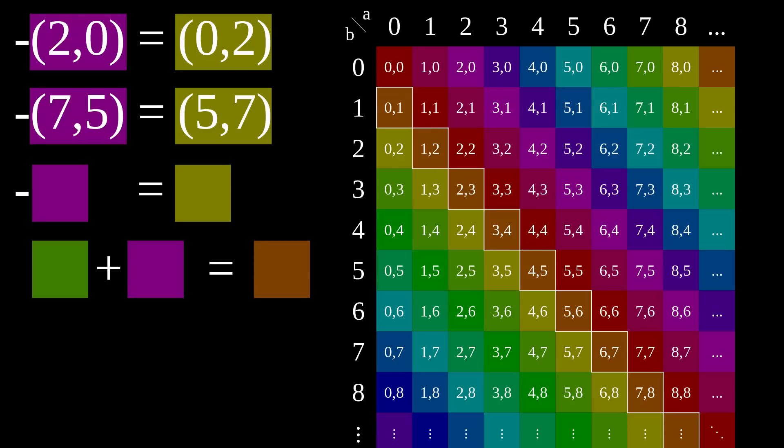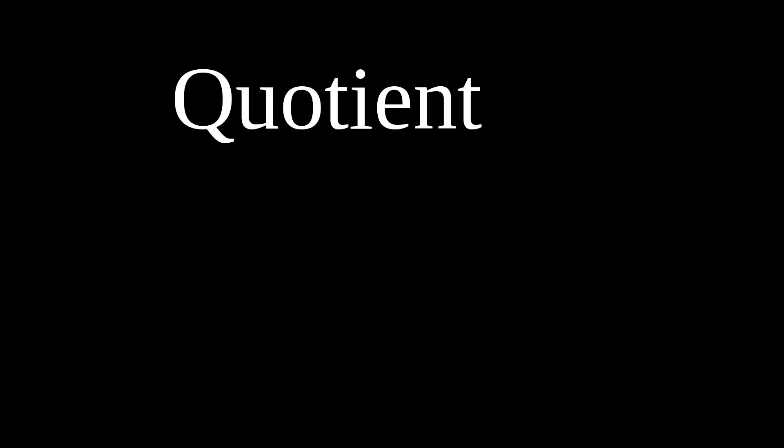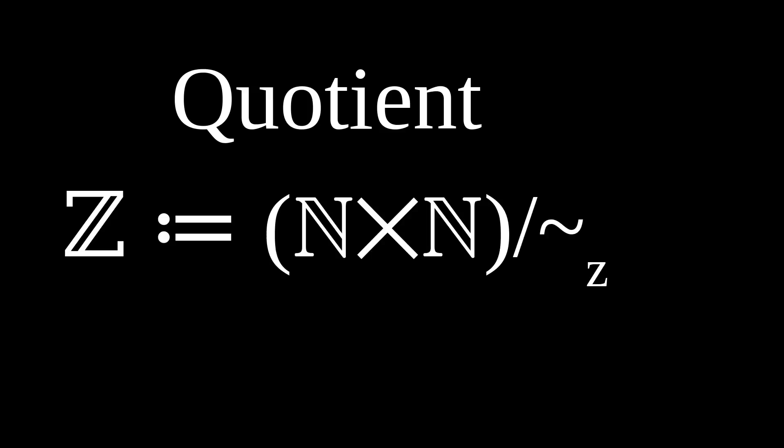This means that, crucially, we can stop thinking about the pairs themselves and start doing arithmetic with just the diagonals. We say that the green diagonal plus the violet diagonal is the orange diagonal. We define the integers to be equivalence classes of pairs of natural numbers with respect to our relation tilde z. This is also called the quotient by tilde z, and it's written like this. n×n is just the set of pairs of natural numbers.